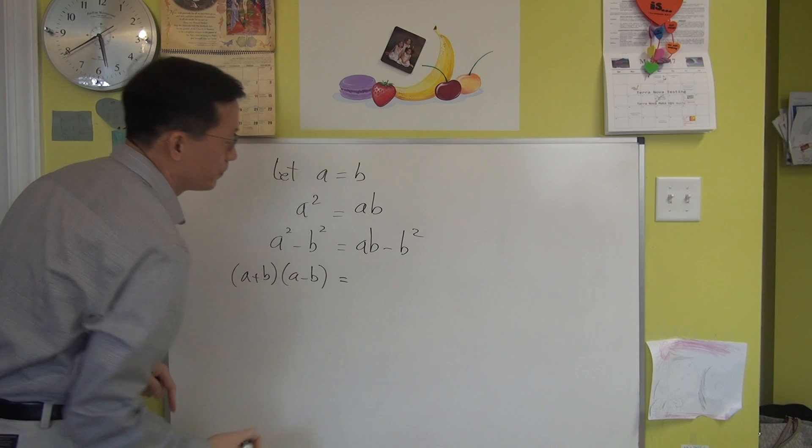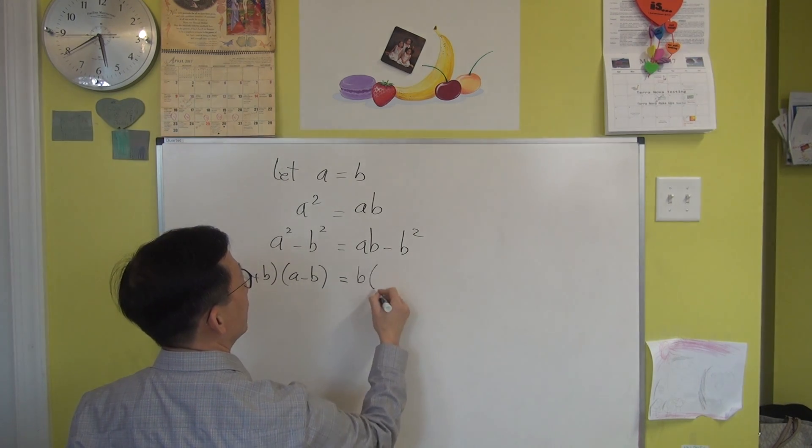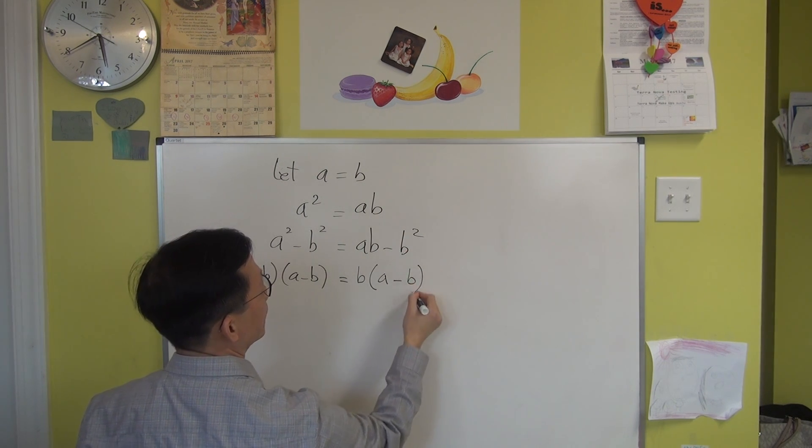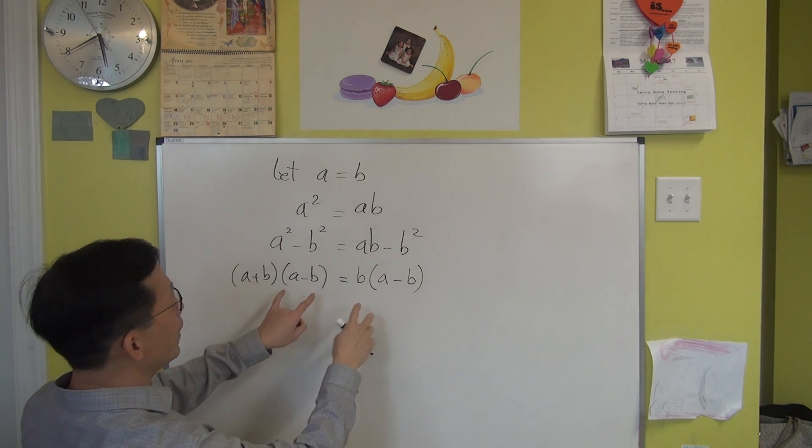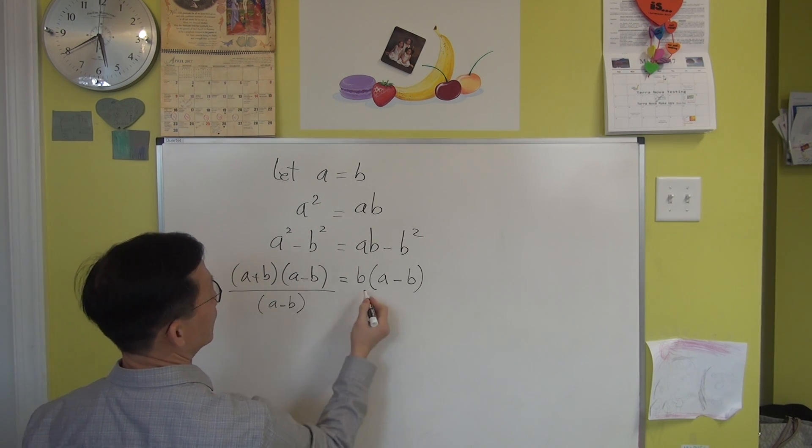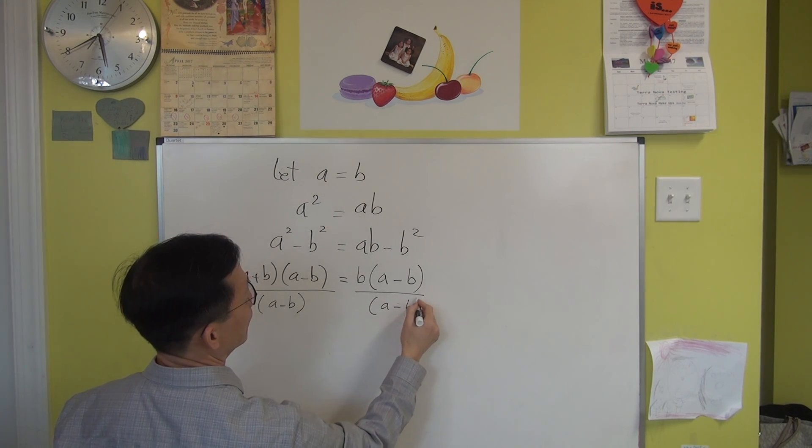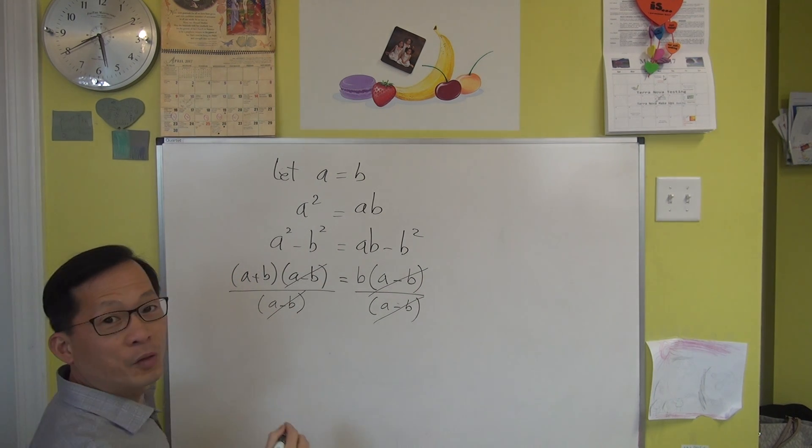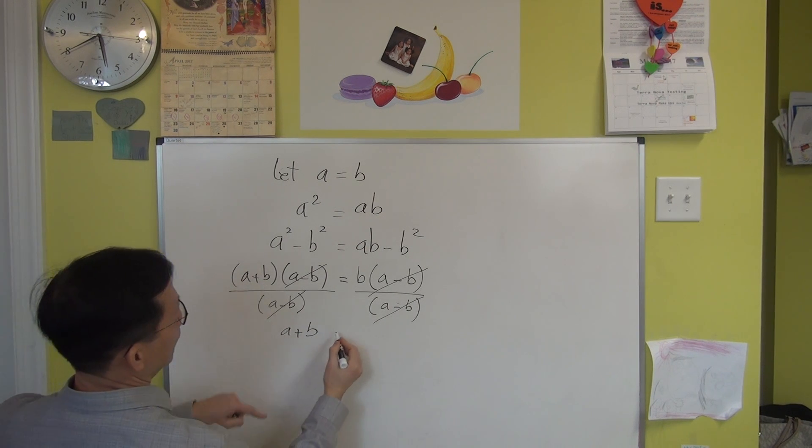Now on this side, I'm going to take the common B to the front. So you have B, and this one has A left, minus just one B. Just take the B out. Now on both sides, you have A minus B as common. So I'm going to divide both with A minus B. Doing the same thing over here. So this is out. This is out. That would leave you with A plus B on this side equal to B.